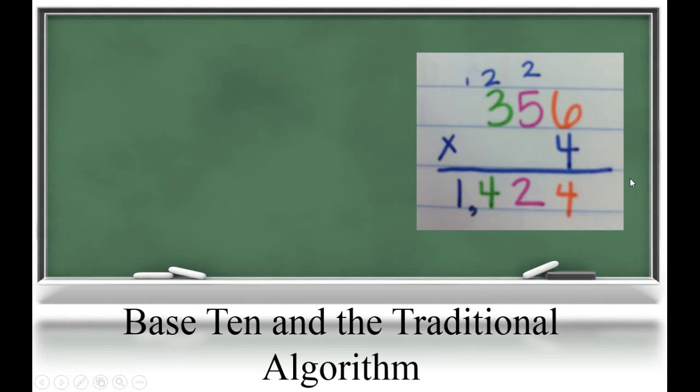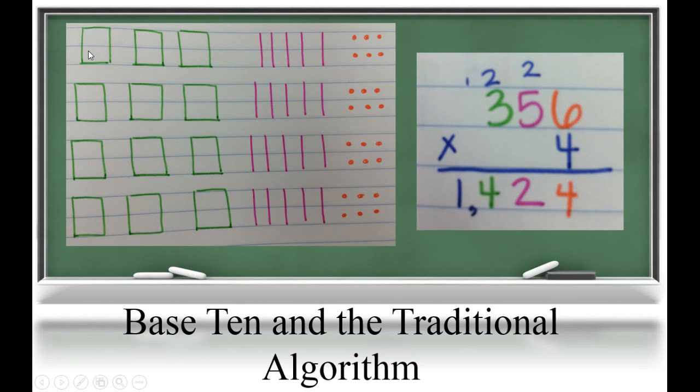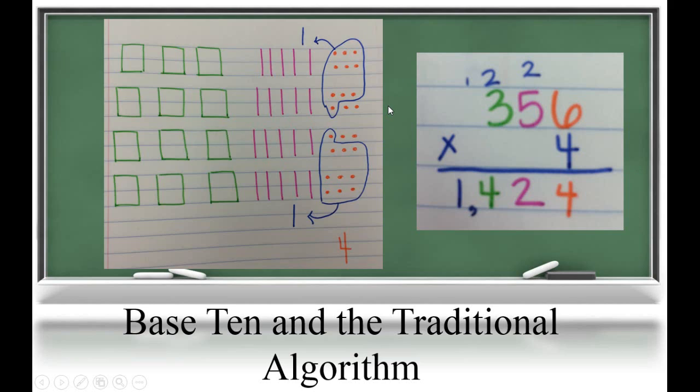Now we're going to move closer to that traditional algorithm. Students will now model using base 10 and tie that to that algorithm so they know why it works. You can see we have 4 groups of 300s, 5 tens, and 6 ones. We're going to start by multiplying our ones first this time. When we multiply 4 groups of 6 ones, we get 24 ones, which we know can be regrouped. We can regroup 10 ones here and make a ten, and 10 ones here and make a ten.